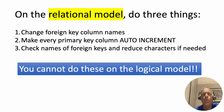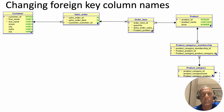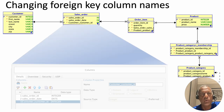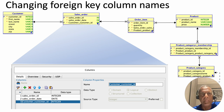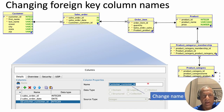Note that these are things you do only on the relational model — you cannot do these on the logical model. Sometimes people come to me saying they're not seeing these changes, and that's because they're doing it on the logical model. You have to do it on the relational model. So first, let's look at how to change the foreign key column names. We open up the Sales Order entity type and see 'customer_customer_id', which we want to change to just 'customer_id'.